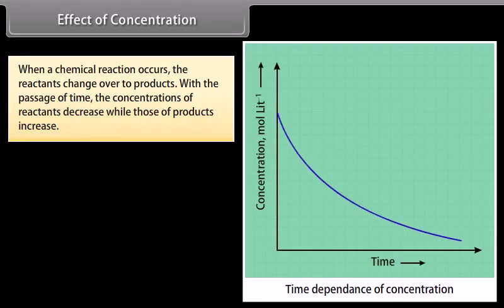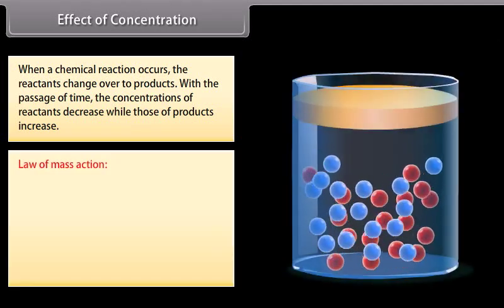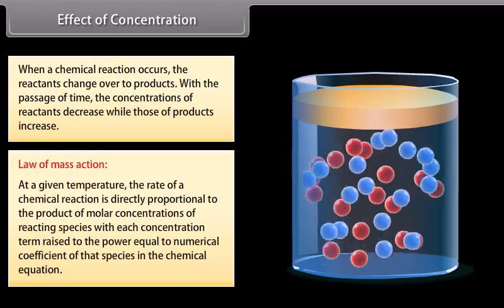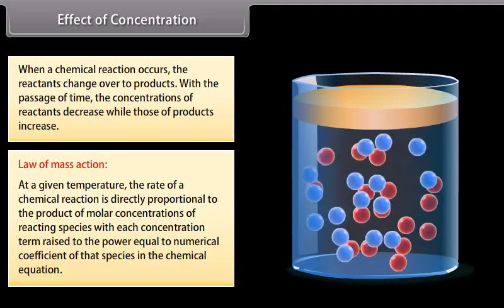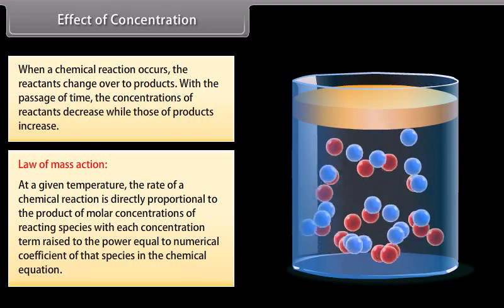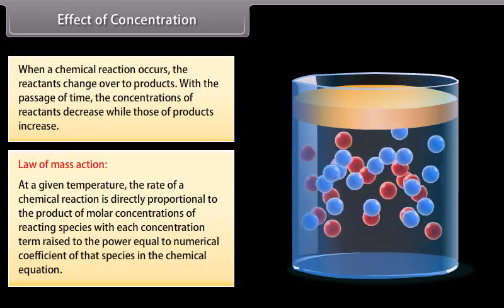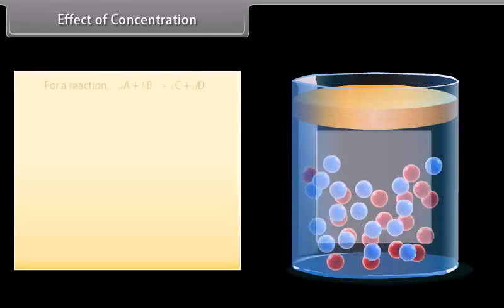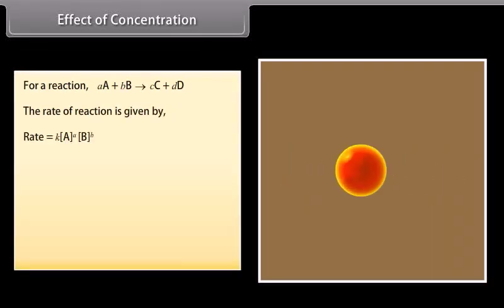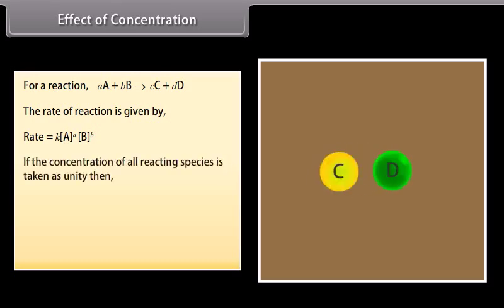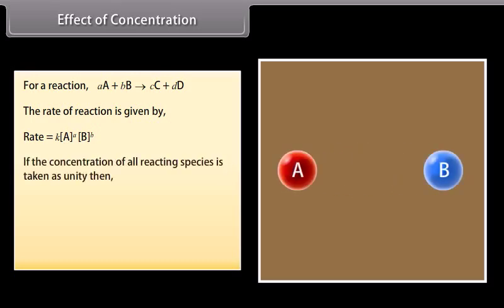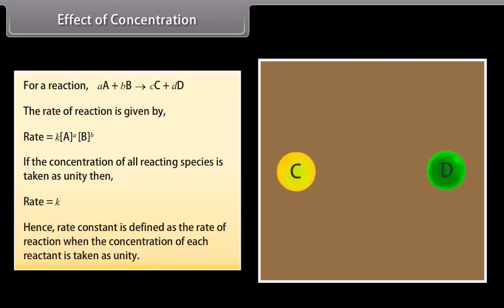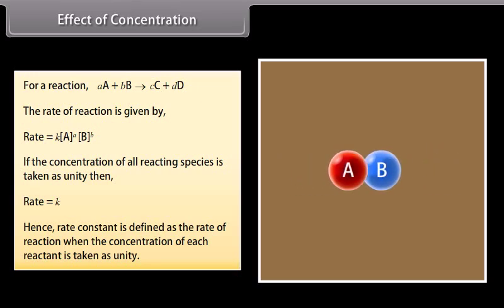When a chemical reaction occurs, the reactants change over to products. With the passage of time, the concentrations of reactants decrease while those of products increase. Law of mass action: at a given temperature, the rate of a chemical reaction is directly proportional to the product of molar concentrations of reacting species, with each concentration term raised to the power equal to the numerical coefficient of that species in the chemical equation. Rate of reaction = K[A]^a[B]^b. If the concentration of all reacting species is taken as unity, then rate equals K. Hence, rate constant is defined as the rate of a reaction when the concentration of each reactant is taken as unity.